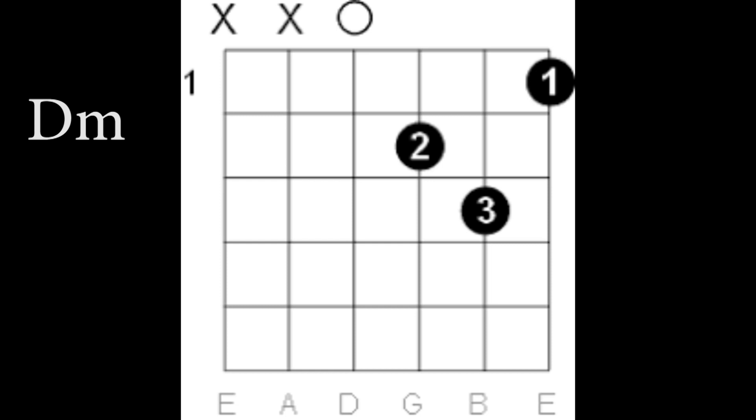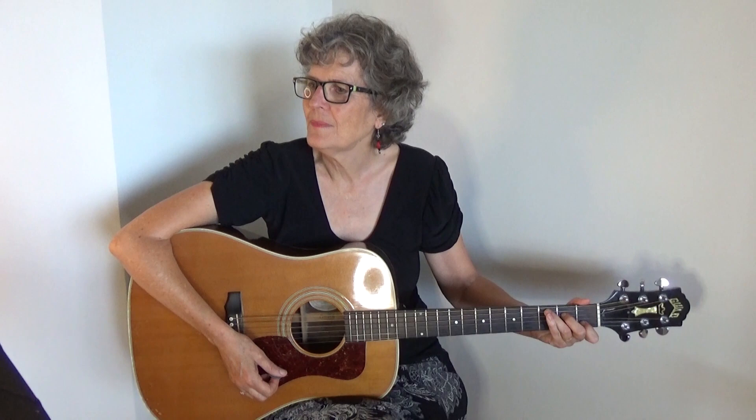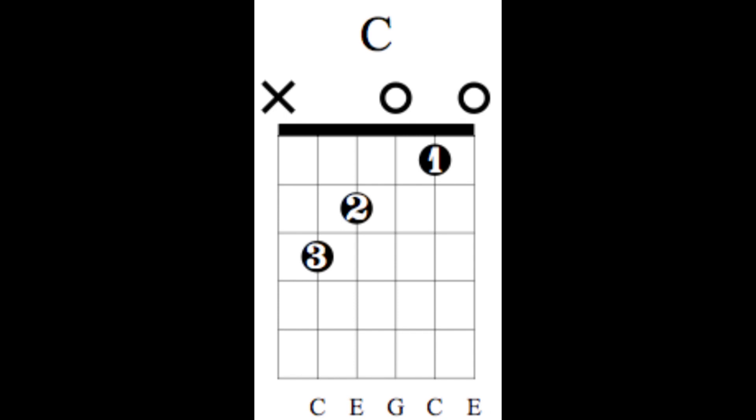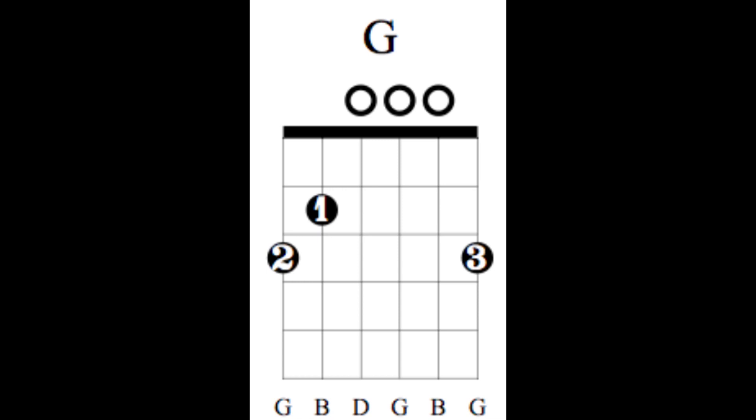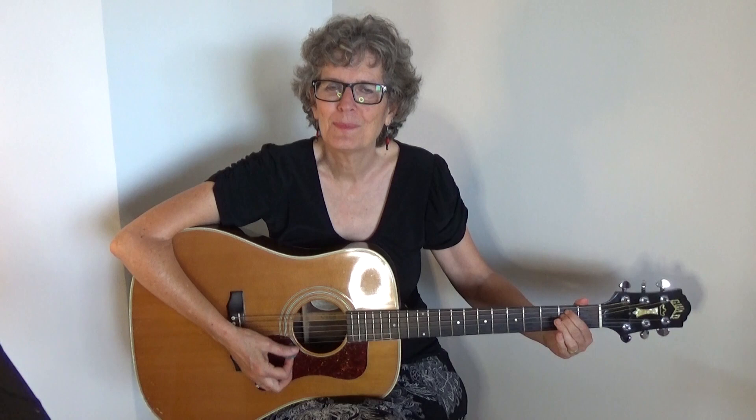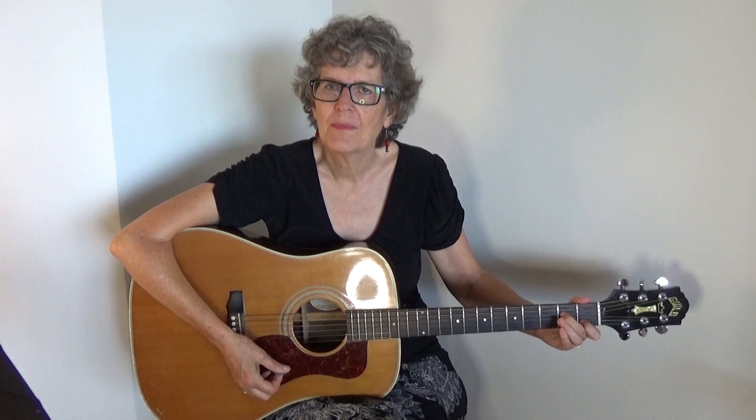Let's get started with the chords. Here we go. There's a D minor. C. F. G. E minor. A minor 7th. F add 9.